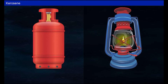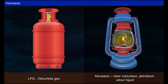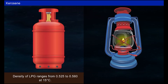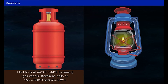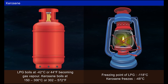Comparing properties of LPG and kerosene: LPG is an odourless gas, while kerosene is a clear, colourless to light amber coloured liquid with a petroleum odour. The density of LPG ranges from 0.525 to 0.580 at 15°C, while kerosene ranges from 0.78 to 0.81 g/cm³. LPG boils at minus 42°C (minus 44°F), while kerosene boils at 150–300°C (302–572°F). The freezing point of LPG is minus 118°C, while kerosene freezes at minus 48°C.